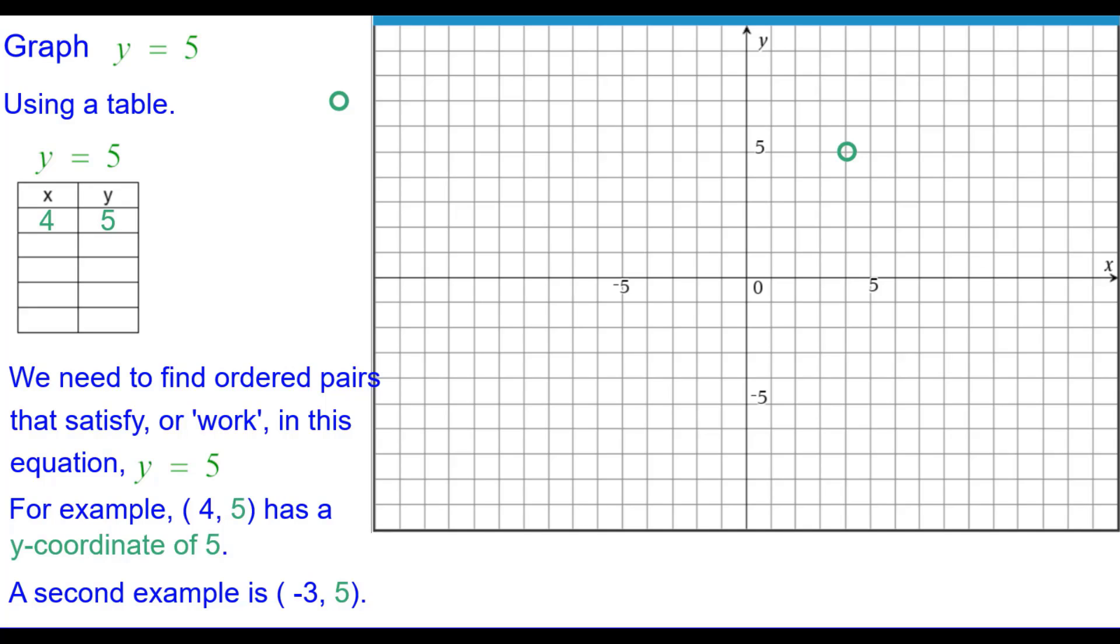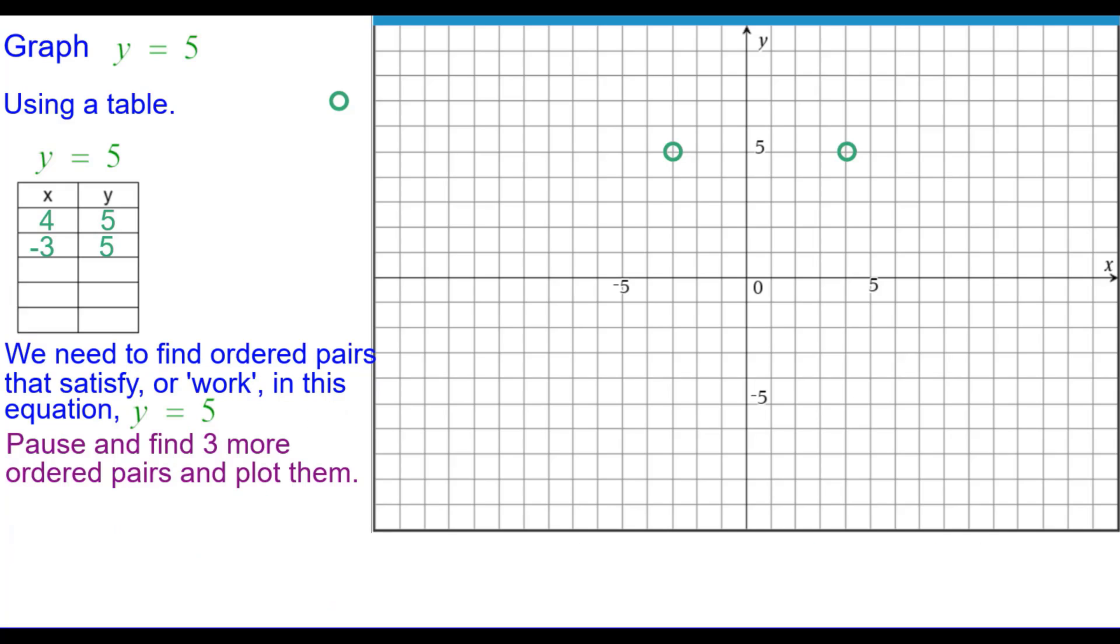The second example is negative 3, 5 and we can put that in the table and also plot that one. Pause and find three more ordered pairs and plot those. Press pause as needed. Resume when you're ready.